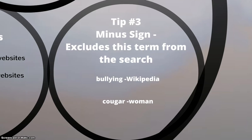The next tip is the minus sign. Sometimes you need to exclude terms from your search. Perhaps your instructor told you don't use Wikipedia. So if I wanted to search for bullying but not Wikipedia, I type in bullying minus Wikipedia. That way anything from Wikipedia will no longer show.